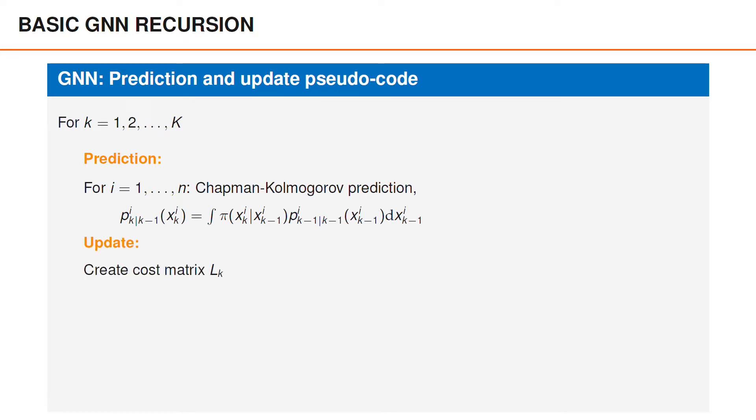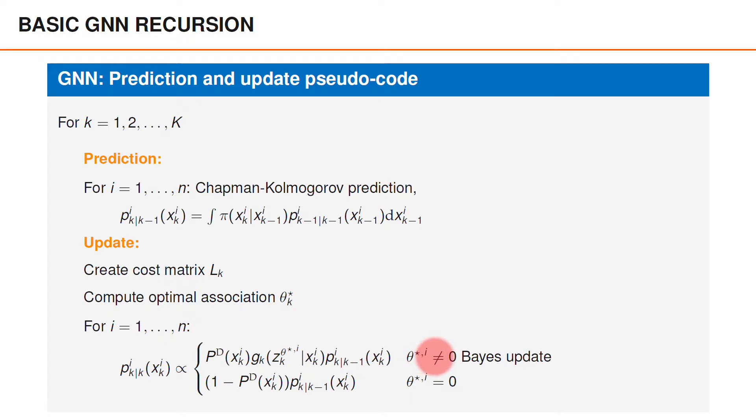Next is the update, which starts by computing the cost matrix L, and this is followed by computing the optimal association theta star. Then given the optimal association for each object we do a Bayes update. If a detection was associated, and if a detection was not associated, then the posterior object density is proportional to the predicted density times the probability of misdetection.